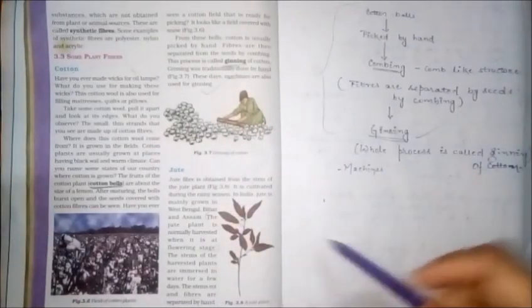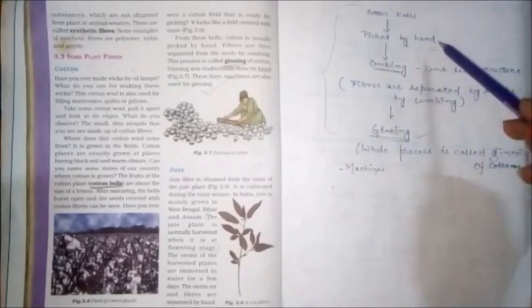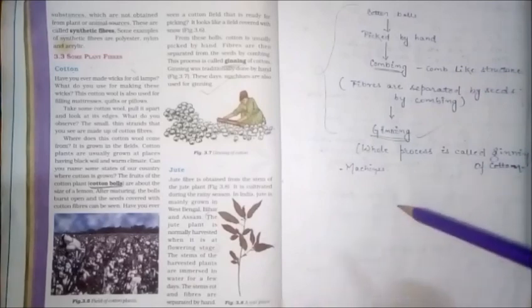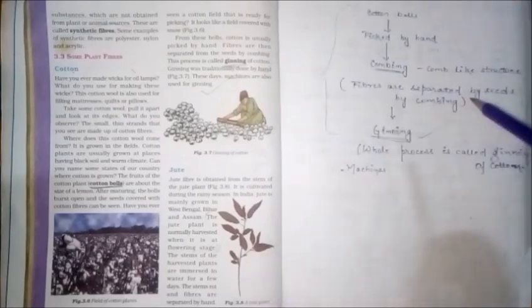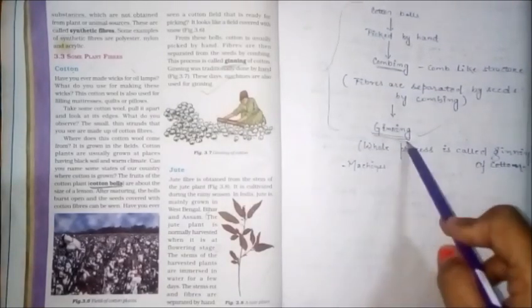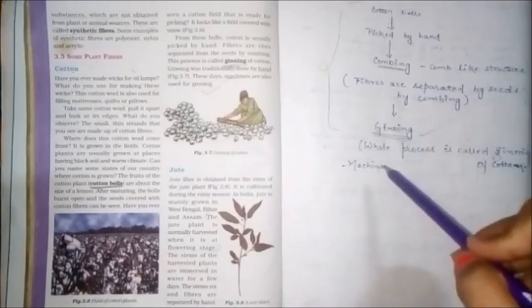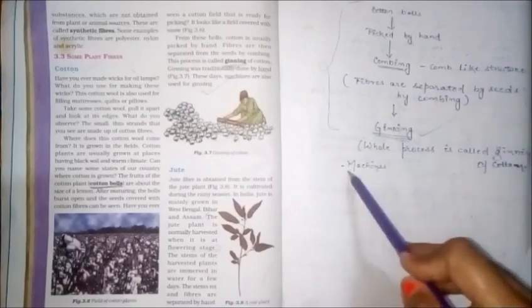When the cotton balls get matured, it is picked by hand and fibers are separated from seed by the method called combing. In this method, a comb-like structure is used to separate both fibers and seeds, and the whole process is called ginning. Traditionally this was done by hand, but nowadays ginning is done by machines also.